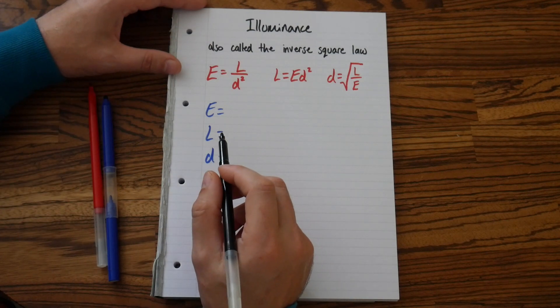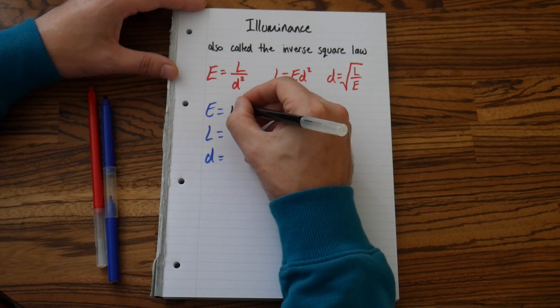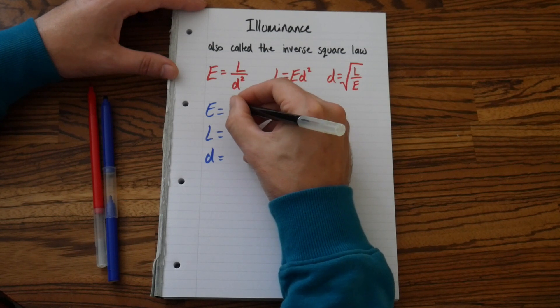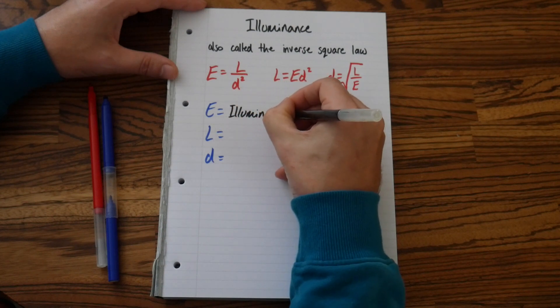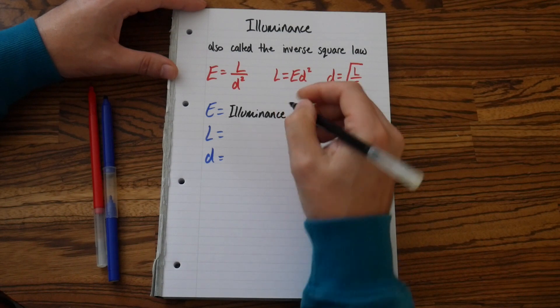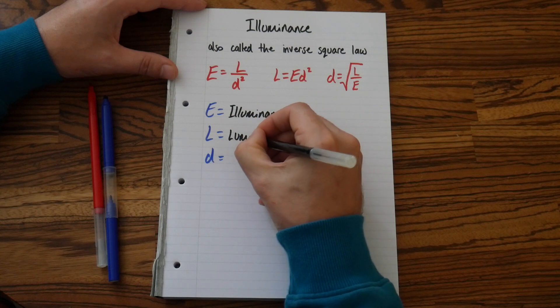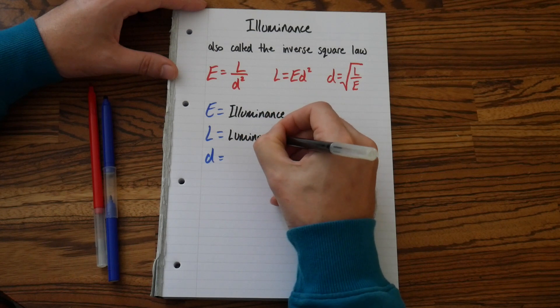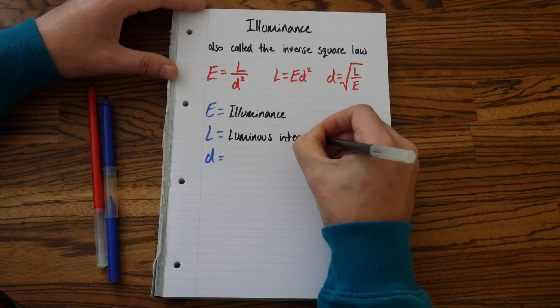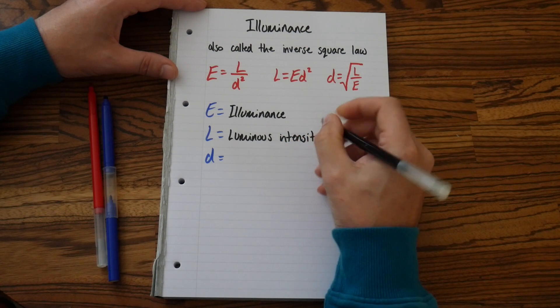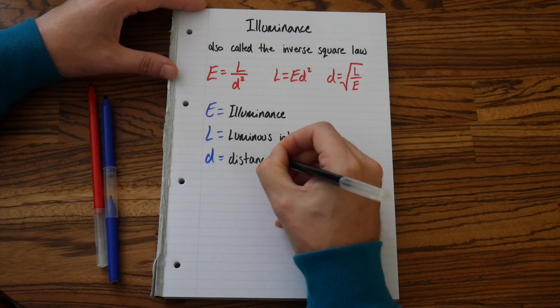So, E is Illuminance. Yep, that's a capital. And L is something called Luminous Intensity. And D is good old-fashioned distance.